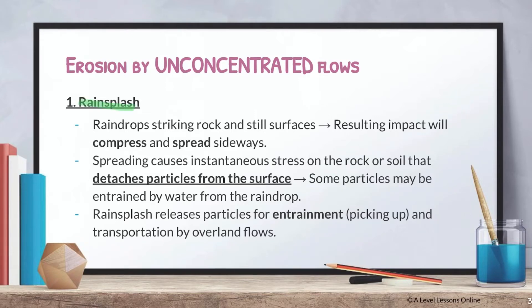The first unconcentrated flow is rain splash. As the name suggests, raindrops striking rocks and soil surfaces result in an impact whereby material is compressed and spreads sideways. This spreading causes instantaneous stress on the rock or soil, detaching particles from the surface. Some particles may be entrained — picked up — by water from the raindrop, and later transported by overland flows or possibly wind.